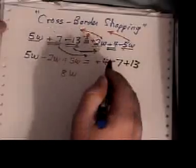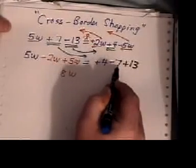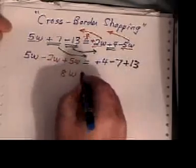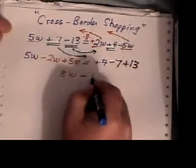On the other side, 4 minus 7 is negative 3, negative 3 plus 13 is 10.